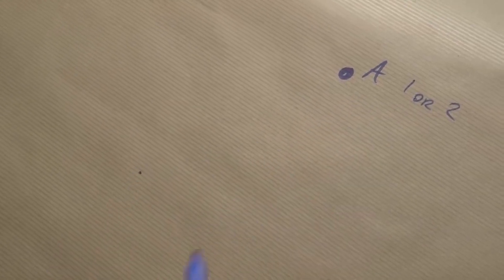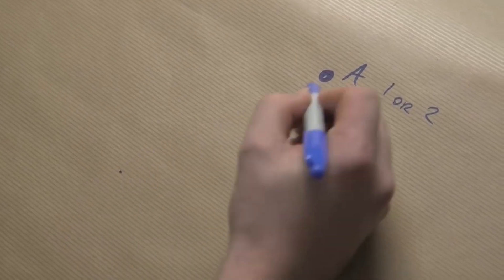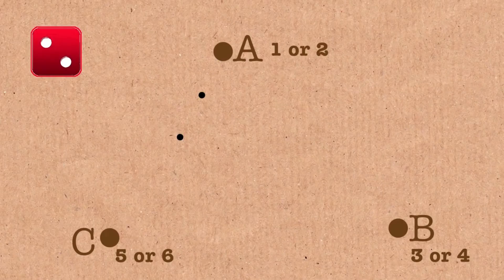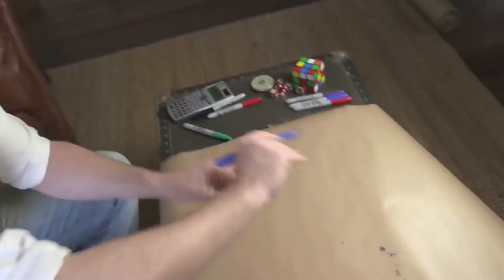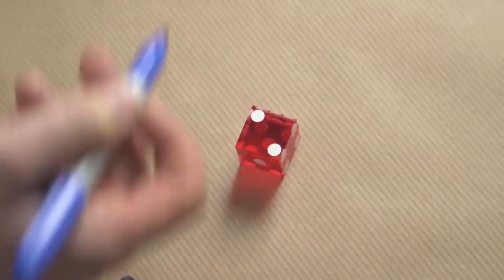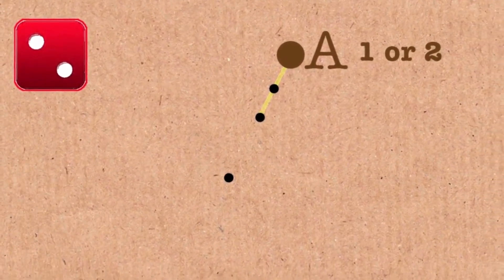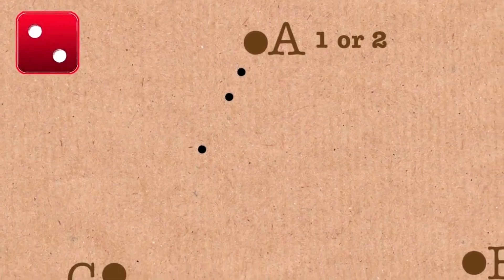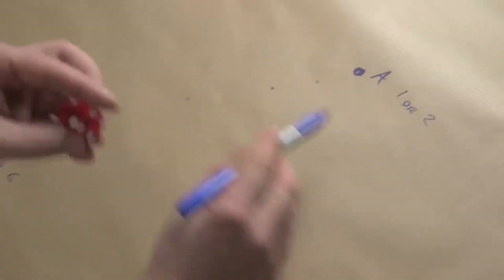I rolled a two, so I need to go halfway toward A. For speed I'm just going to go roughly halfway, put a dot there, and keep doing this. We're iterating — repeating from the last result — and the start point could be anywhere, even outside the triangle. I've just rolled a two again, so from the previous dot I go halfway, and that's my new point.